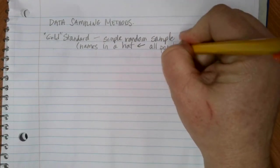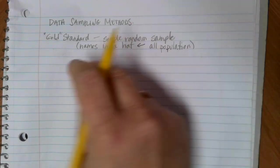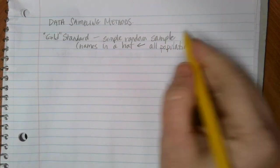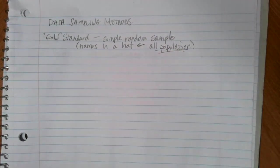But the whole population is represented and every single person has a chance to be picked in that realm. So what's important in that simple random sample is that the whole population is having an equal opportunity to be picked.